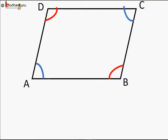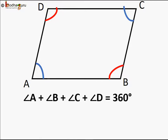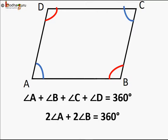The sum of all angles in a quadrilateral is 360 degrees, meaning angle A + angle B + angle C + angle D = 360°. Since opposite angles are equal, we replace angle C with angle A and angle D with angle B, giving us 2·angle A + 2·angle B = 360°, which means angle A + angle B = 180°.